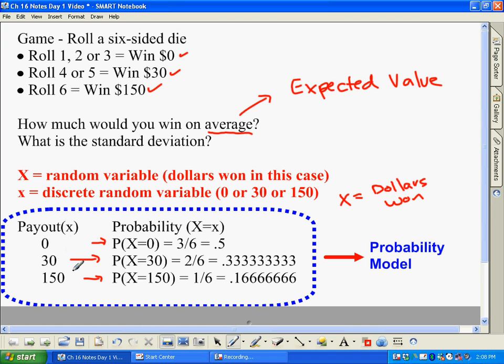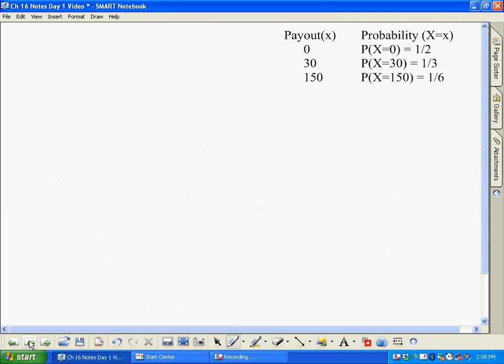There's three things that can happen, and we have to account for their probabilities. So based on that, I've gone ahead and just written the same exact table over here. So we have our three payouts, and our probability model says half the time you're going to get nothing.